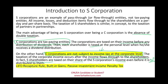However, there are exceptions. S corporations sometimes pay taxes at the corporate level for certain items — specifically, LIFO recapture rules, built-in gains, and the passive investment income penalty tax. These arise because the corporation may have previously operated as a C corporation for several years before electing S status.